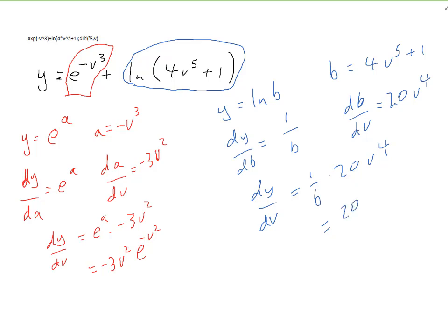And you multiply these together to get dy/dv. dy/dv for this part is 1 over b times 20v⁴. And then we can replace b by this. So you have 20v⁴ divided by b. And b is this, 4v⁵ + 1. And there is not much you can do to simplify that. So the final answer is that dy/dx, the overall answer is just equal to this.